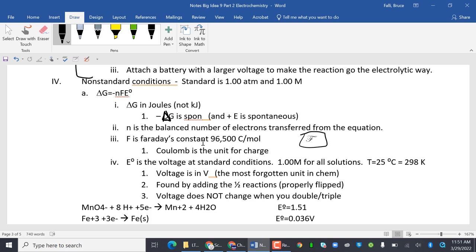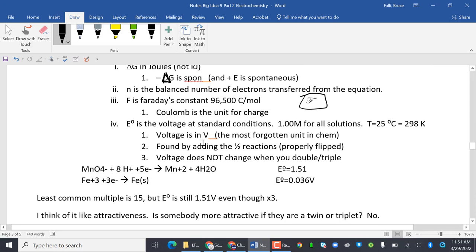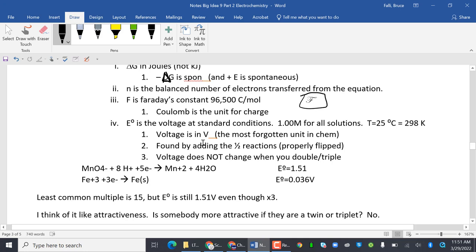The voltage is in volts, and a lot of times people forget to put the volts on it. It's found by adding the half reactions properly flipped. And the voltage does not change when you double or triple. So let's take a look at these two reactions. I have five electrons and I have three electrons. The least common multiple of electrons is 15. But when I do that, I'd multiply this by three and that's by five. The voltages do not change.